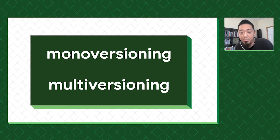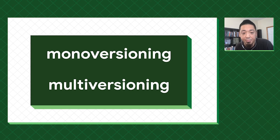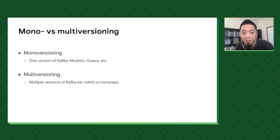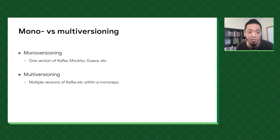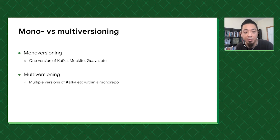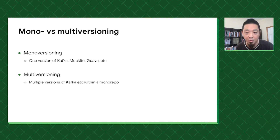Stepping back a little bit, let's look at what monoversioning and multiversioning are. Monoversioning is basically having one version of Kafka, Mockito, or Guava in the monorepo, whereas with multiversioning you have multiple versions of Kafka, Mockito, or Guava.